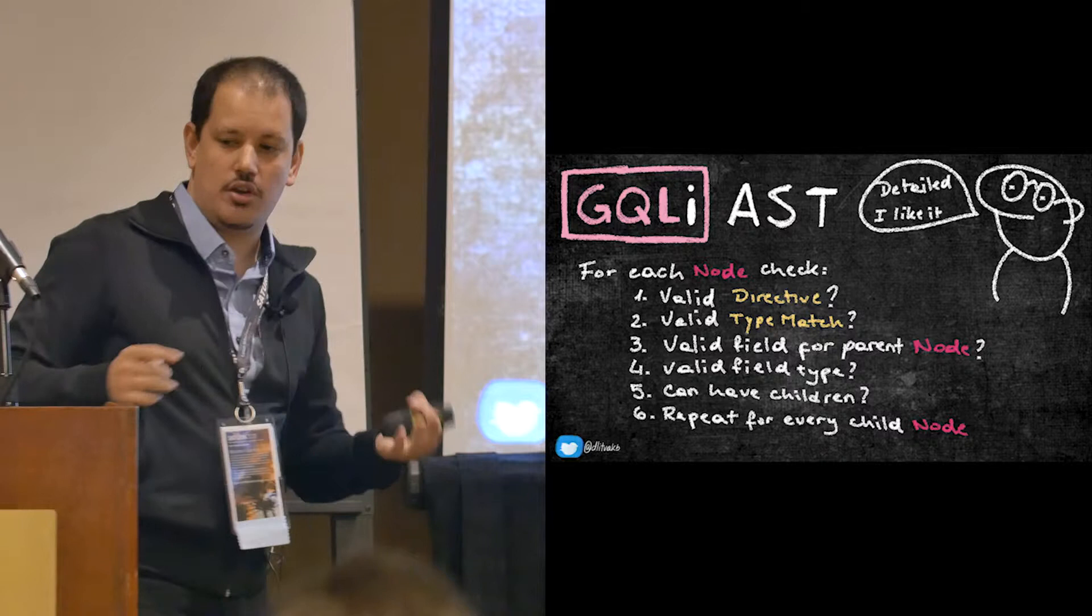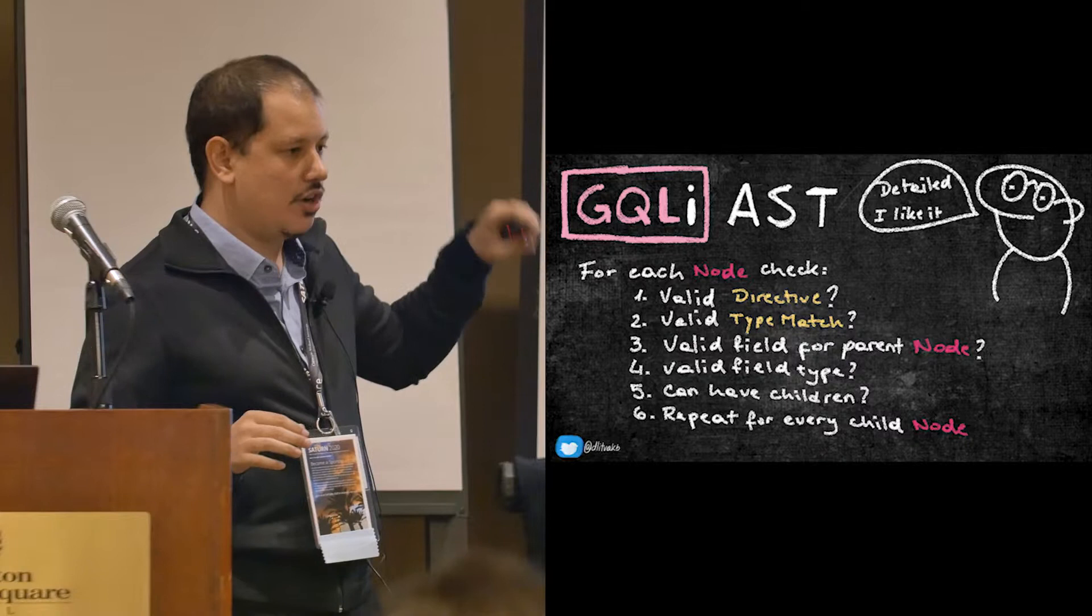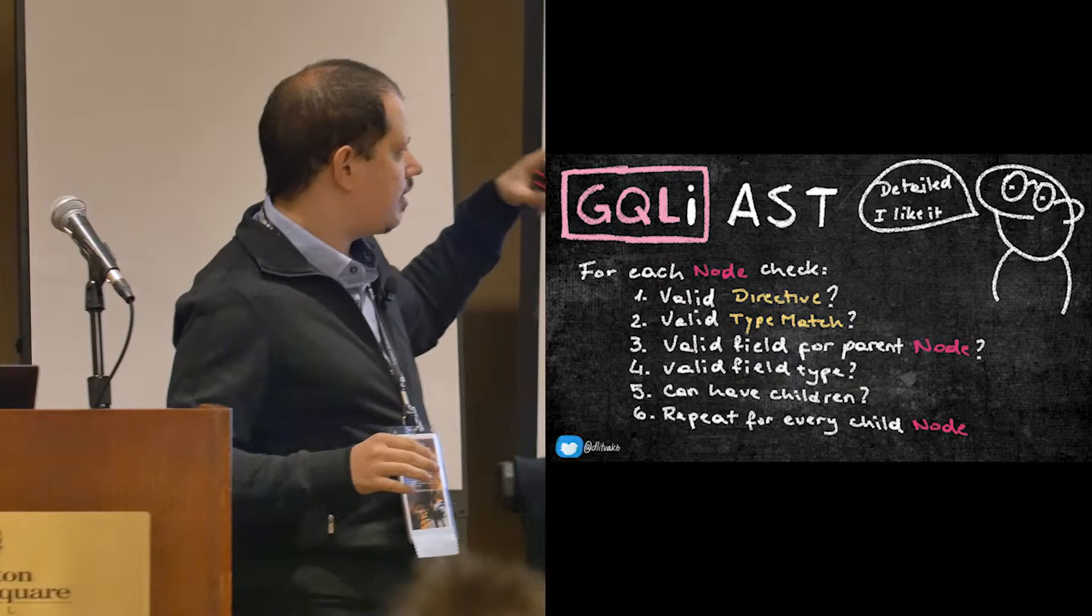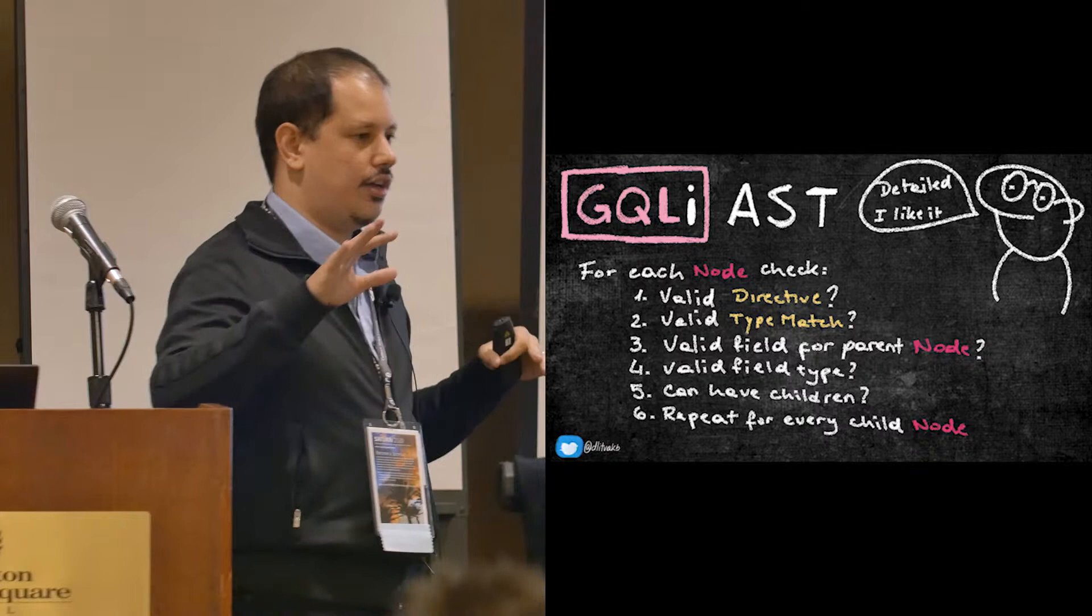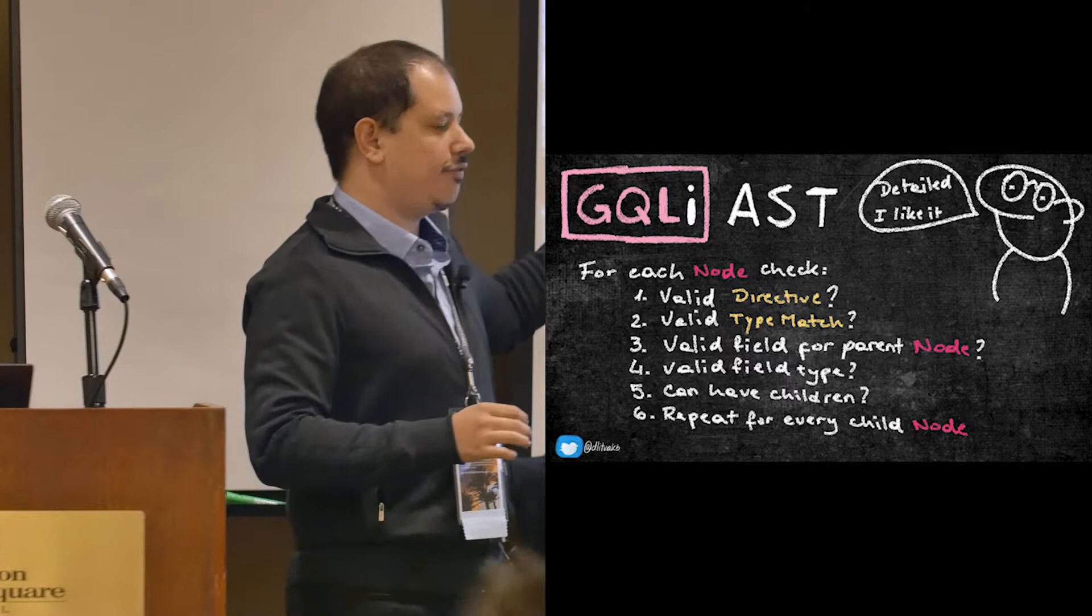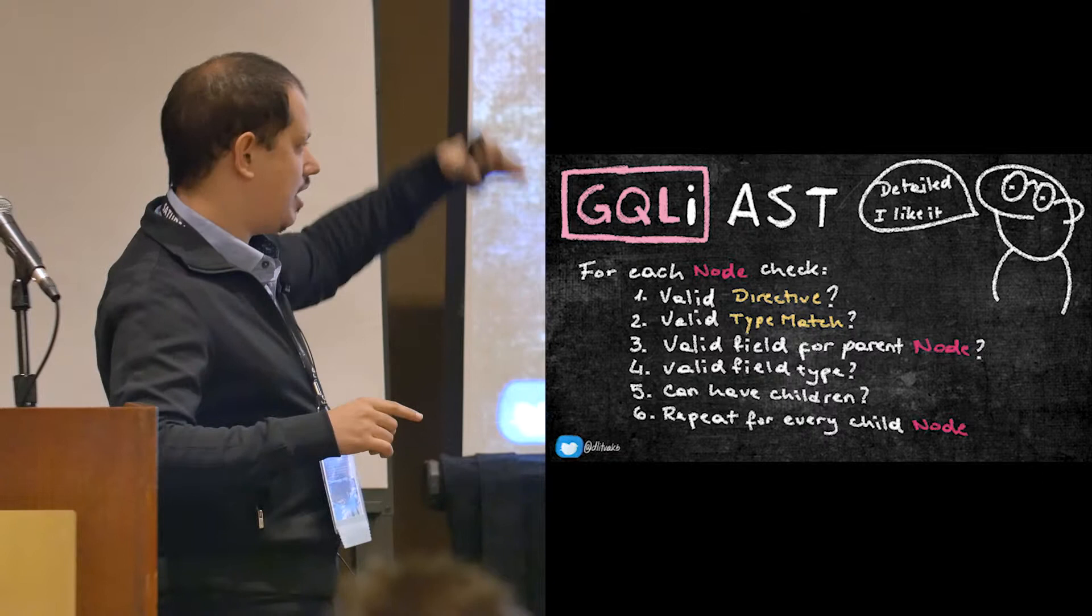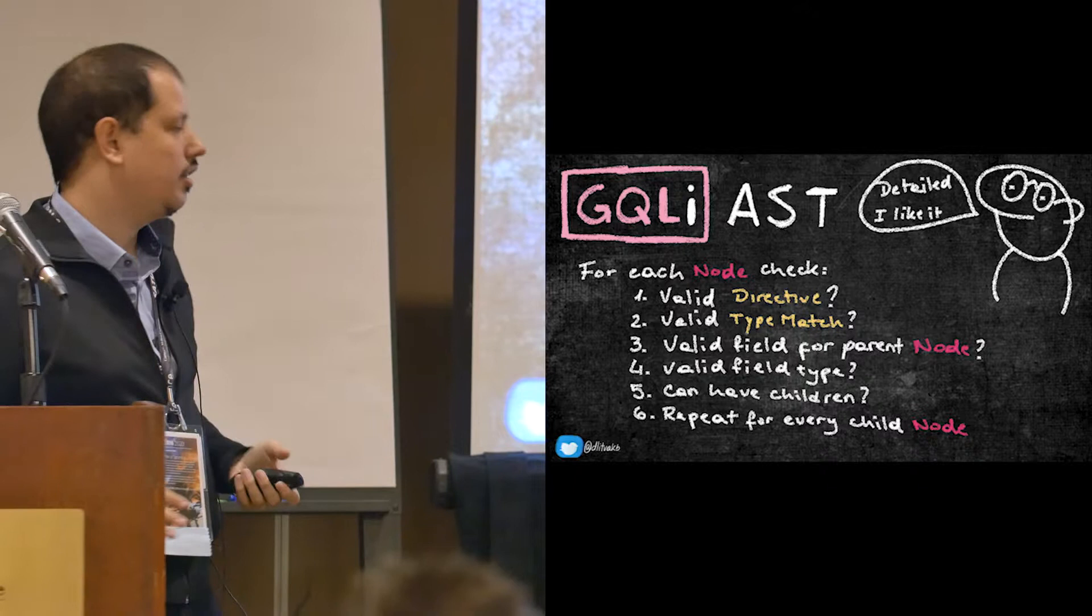And what does this AST validation do? So for each node there's a few checks. I check if it's a valid directive. There's a few that for example like includes or skip. If the type of the node matches the fields of the parent. If it's a valid type match node. So for example, if you have triple dot on some type, then fetch some particular fields. That's the type match. Valid field for the parent node. If the field itself is a valid field type. If it can have children. I forgot to add if it can have attributes. And then for every children in the tree, I repeat the same thing. Because all of these properties apply at any level of the AST tree.